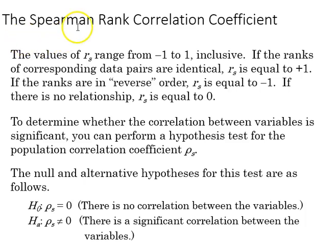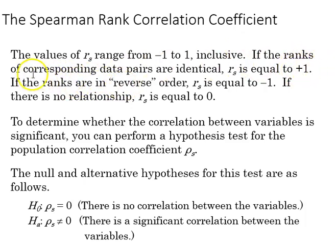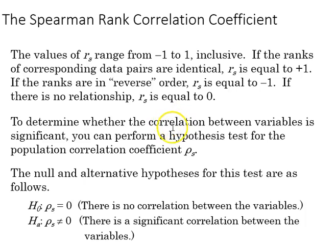The value of the Spearman rank correlation can range from negative 1 to 1. If we see a 1, it means that the rank is identical for both variables. If they're completely reversed, we're going to see a minus 1. If there's no relationship, we're going to see a 0.